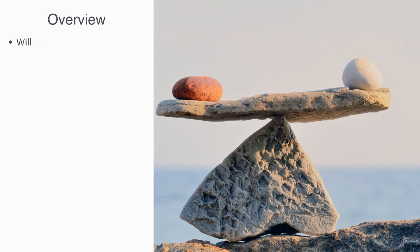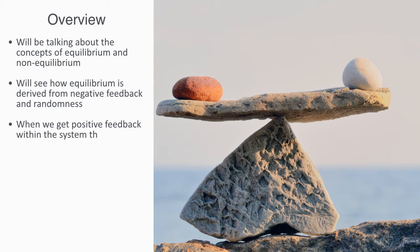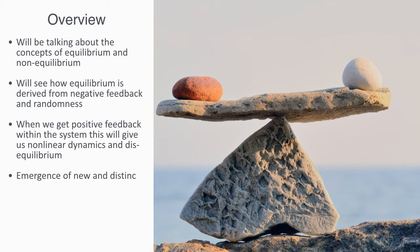In this module, we'll be talking about the concepts of equilibrium and non-equilibrium. Continuing on with our discussion around feedback loops, we'll see how equilibrium is derived from negative feedback and randomness. But as soon as we get positive feedback within the system, this will give us non-linear dynamics and disequilibrium, as we get the emergence of new and distinct patterns of organization on the macro scale.